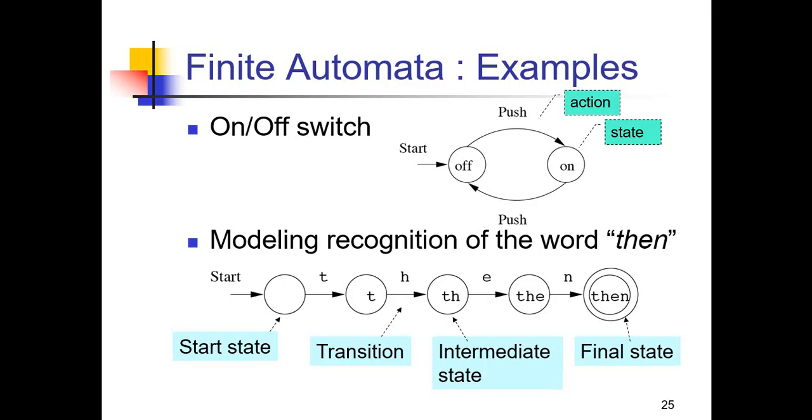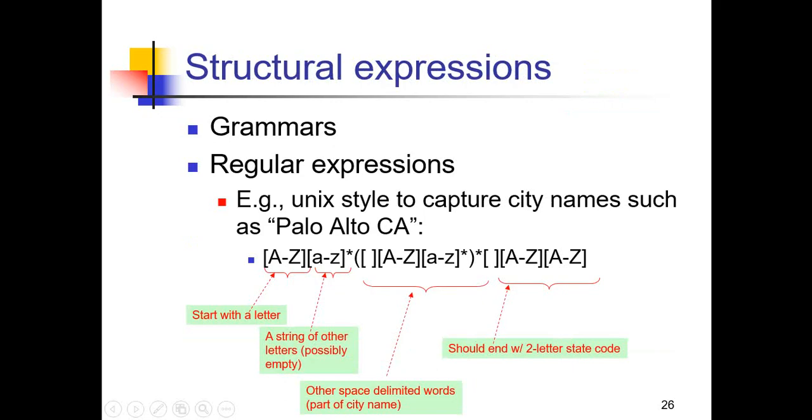It begins from the starting section and for each transaction it will go to a new state. This is in the starting state, after T it will transit to this state, then H, then this one, and then E, then this section. After getting the end it will go to the final state or the destination. That's how 'then' is declared in automata.